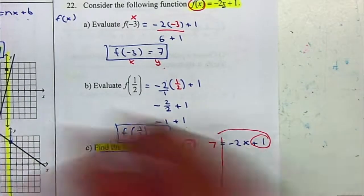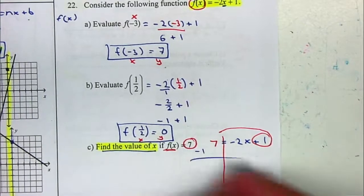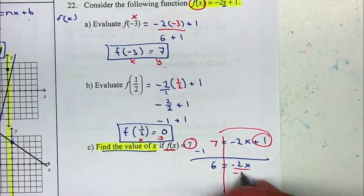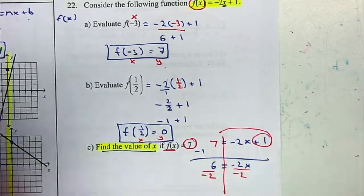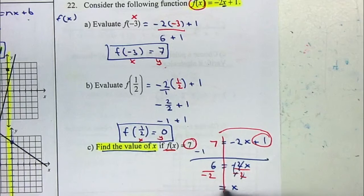Move that 1 to the left, we can say negative 1. So that gives me a 6 equal to negative 2x. I'm going to divide by negative 2. So x equal to negative 3.